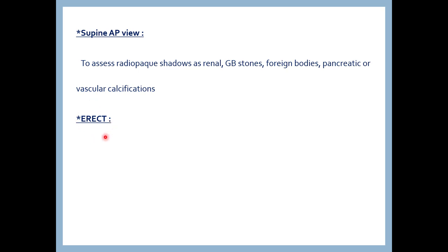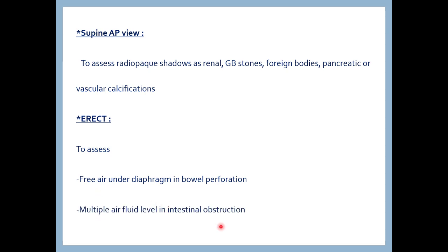The erect position is important to assess air in the bowel loops. In cases of bowel perforation, air ascends upward and extends extraluminally. Free air under the diaphragm is abnormal and characteristic of pneumoperitoneum. Also, in cases of intestinal obstruction — either functional or mechanical — fluid in the bowel loops is stagnant and air ascends upward in the erect position. Multiple air-fluid levels in the abdomen are characteristic and consistent with intestinal obstruction.